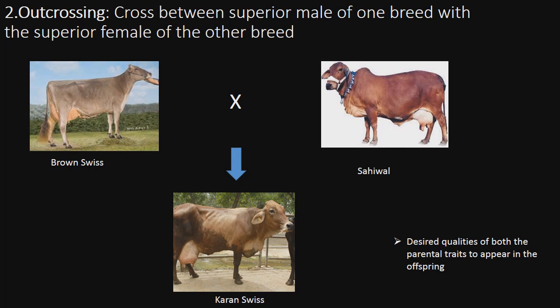Outcrossing is a cross between a superior male of one breed with a superior female of another breed. The offspring carries the traits of both parents.